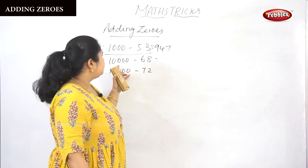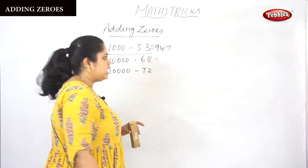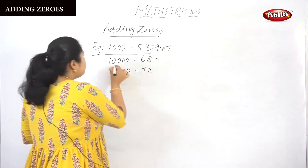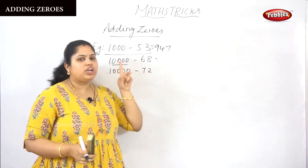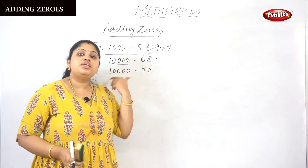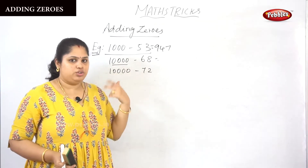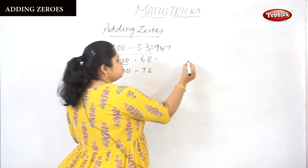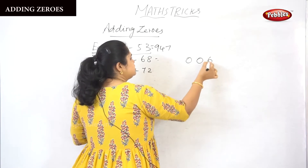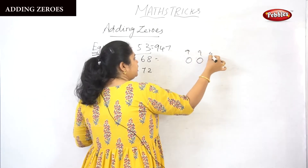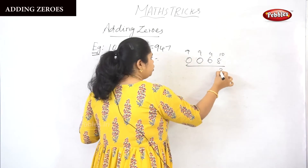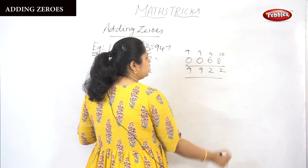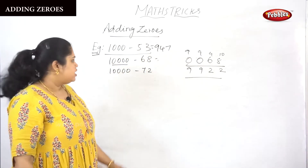Next: 10,000 minus 68. How many zeros do you want to add? Two zeros. Here there are four zeros, but only two digits. So two zeros need to be added. I am putting two zeros here: 0, 0, 68. All from the nine and the last from the ten: 2, 8, 9, 9 — so 9932 is the answer.